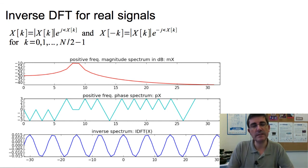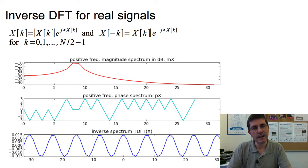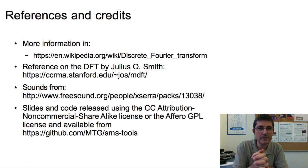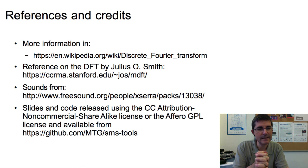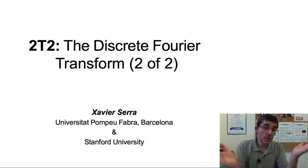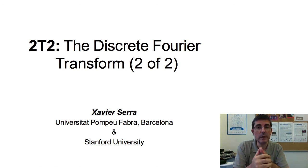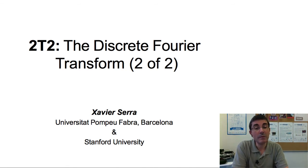We'll come back to these concepts in the next lecture, so don't worry if you still don't completely understand them. You can find a lot of information about the discrete Fourier transform on Wikipedia and on Julius's website. In the first part of this lecture we introduced the DFT equation, and in the second part we have seen how the DFT works when the input is a sinusoid, and we have also explained the inverse DFT. If you have been able to understand this, you are doing very well and should have no problem with the rest. See you next class — thank you.